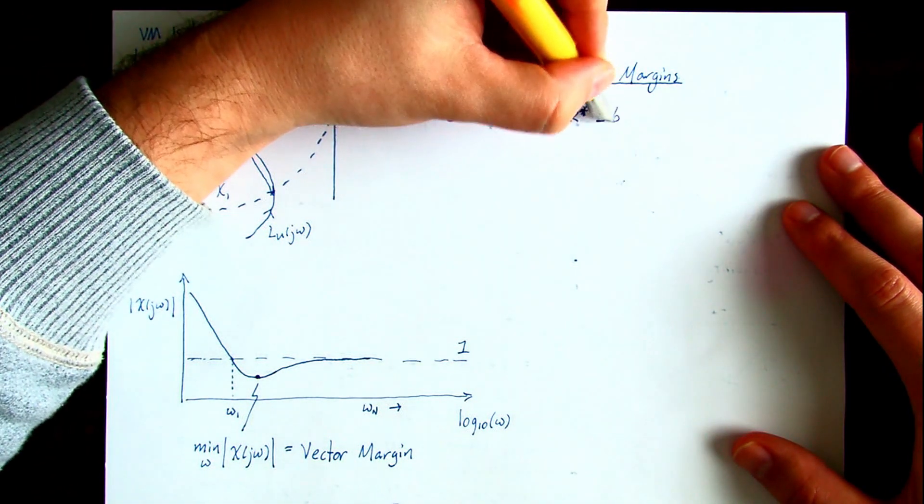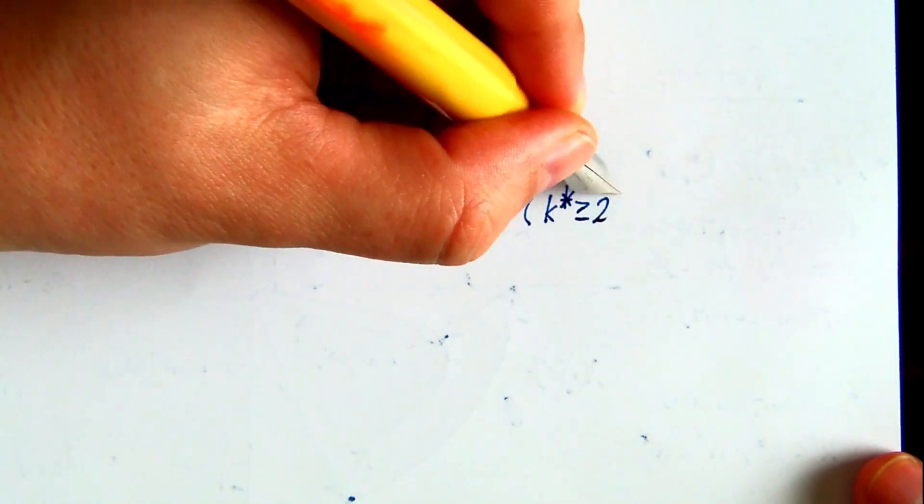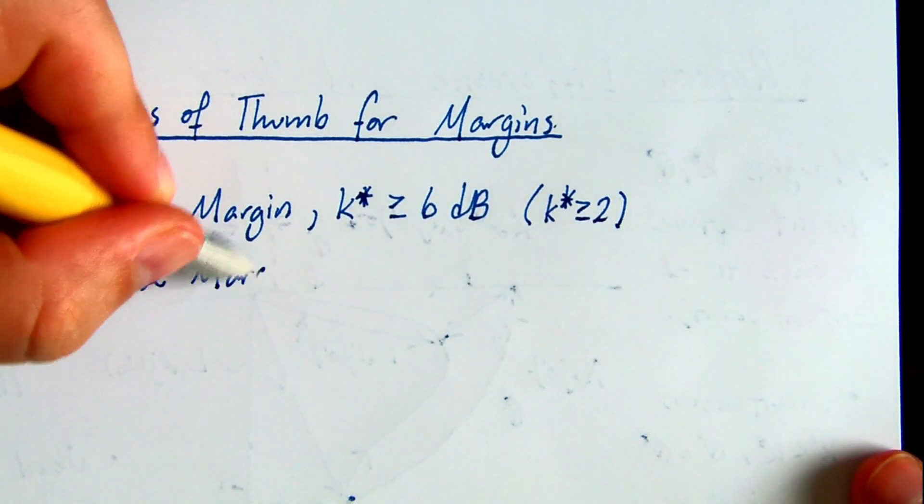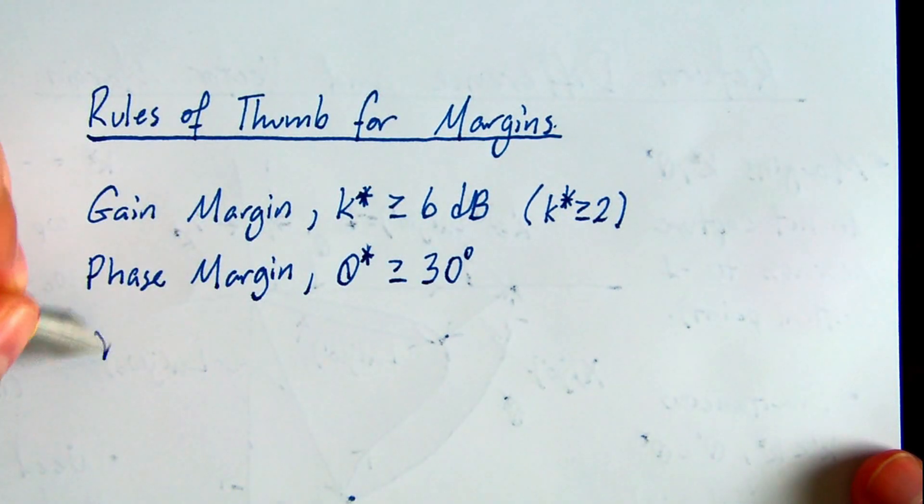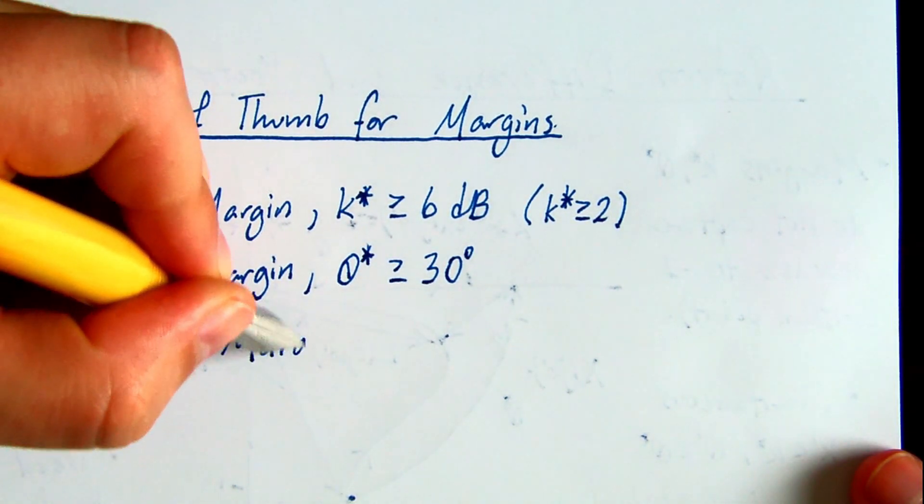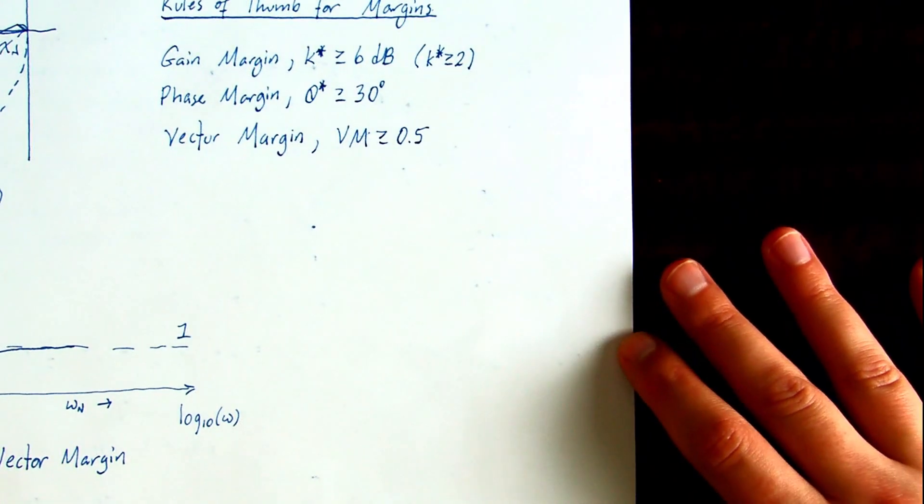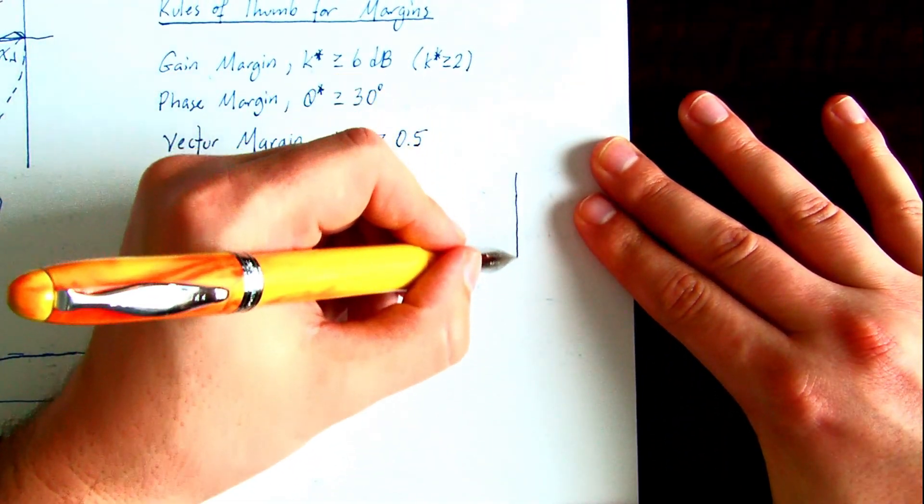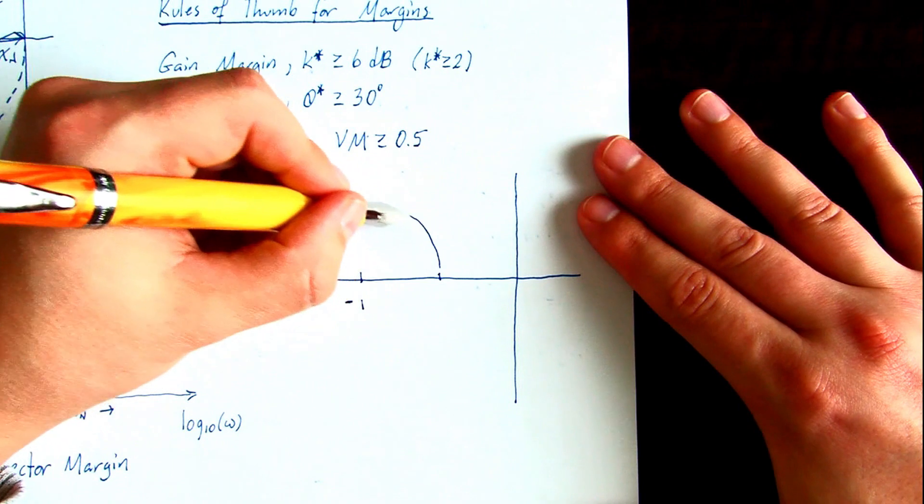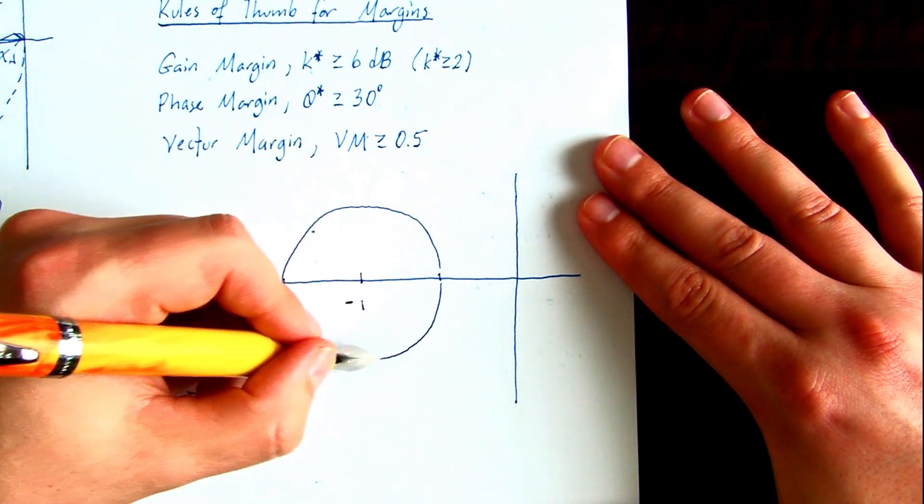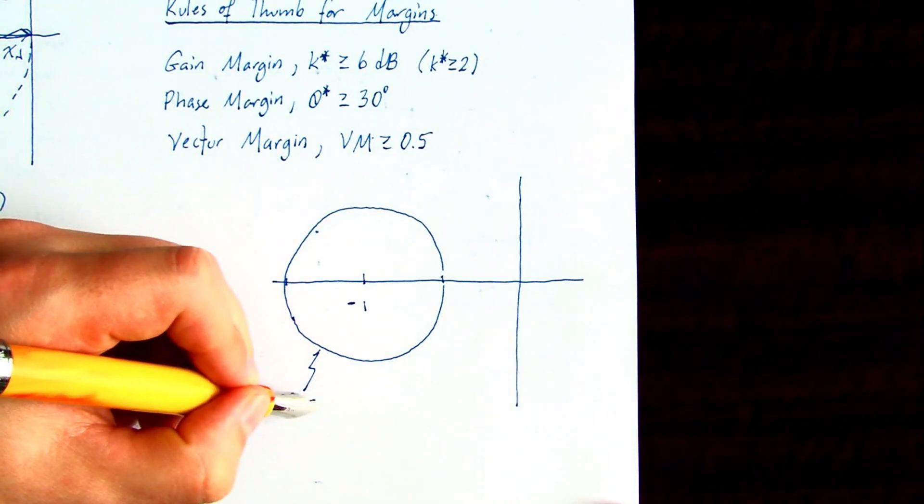So rules of thumb, and these vary by the class of system being controlled, it's reasonable to say at least six decibels of gain margin and at least 30 degrees of phase. For vector margin, a reasonable threshold is 0.5. Note it's not on a dB scale. So to interpret this, put the half disk around the critical point that represents that vector margin magnitude. The loop gain should not enter that disk. And then this implies gain and phase margins also.